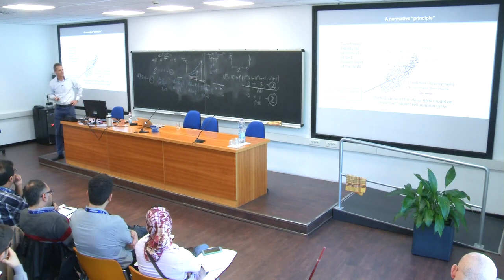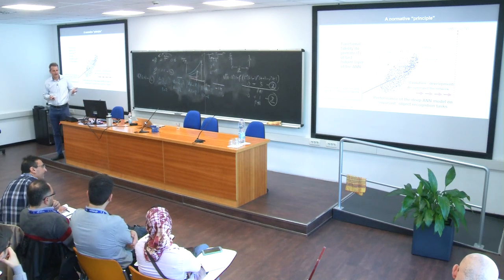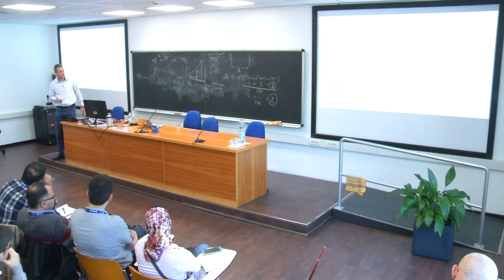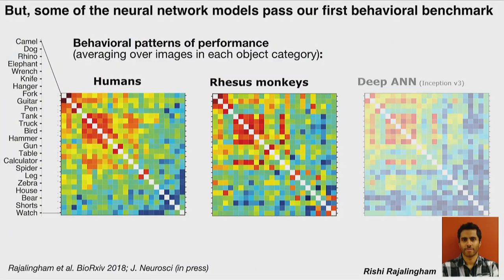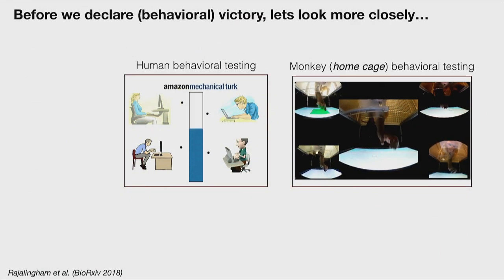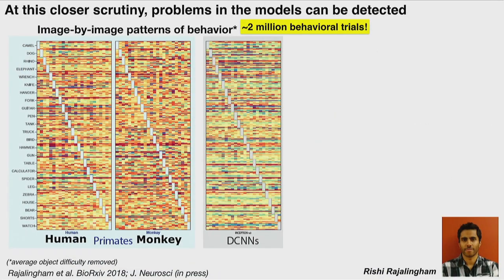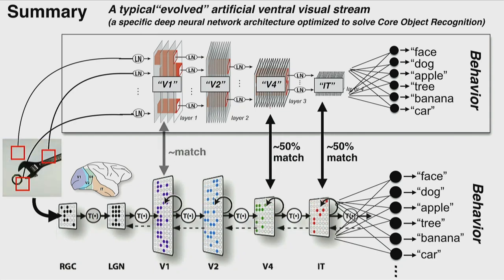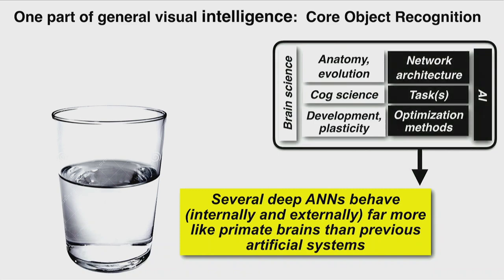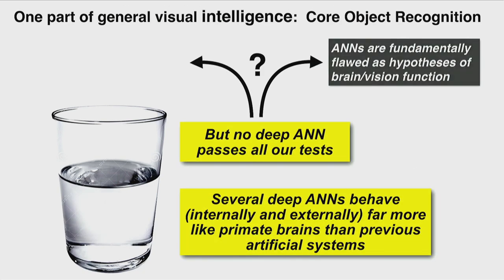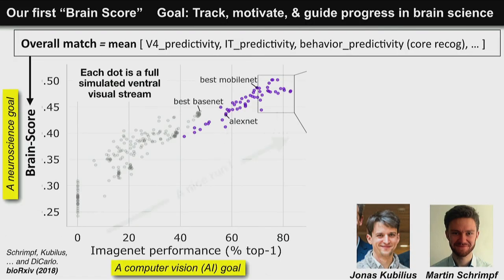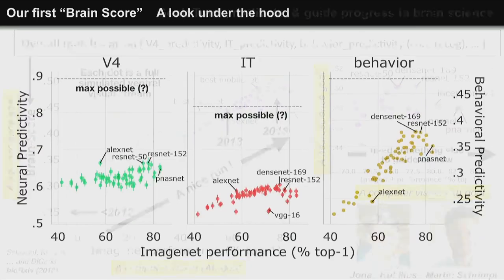Moving on to what's wrong with these models. I already showed you some things: the glass half-full, half-empty point of view — we've got 50% explained variance but also 50% unexplained variance. I was taking you through all the behavioral data that we can't yet predict. We do pretty well, but not perfect, and I can quantify all of this. We've got to find better ANNs. I showed you a brain score to keep track of where we are, and I'll return to that later.